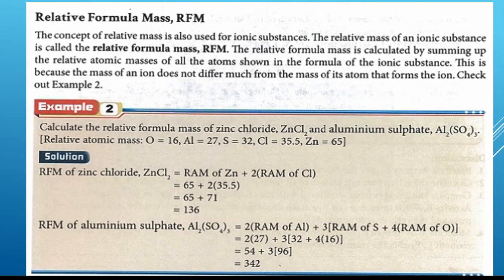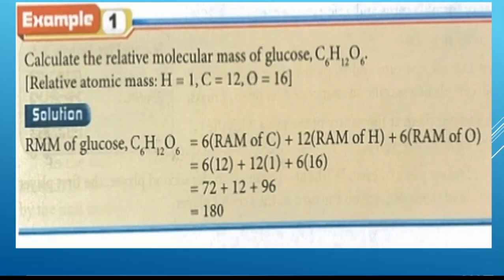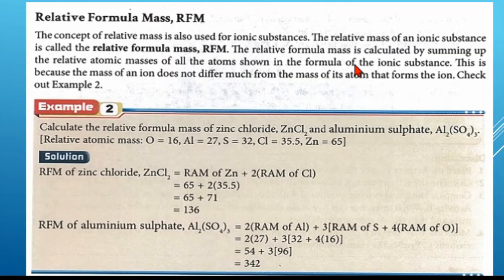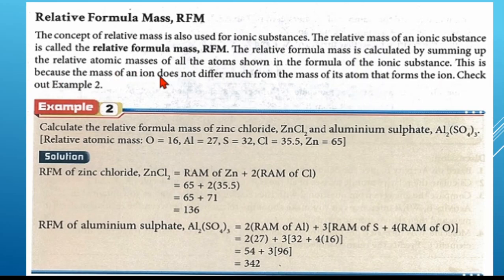Next, relative formula mass (RFM). The concept of relative mass is also used for ionic substances. We discussed RAM for atoms and RMM for molecules; for ions we call it RFM, relative formula mass. The relative formula mass is calculated by summing up the relative atomic masses of all the atoms shown in the formula of the ionic substance, because the mass of an ion does not differ much from the mass of its atom.